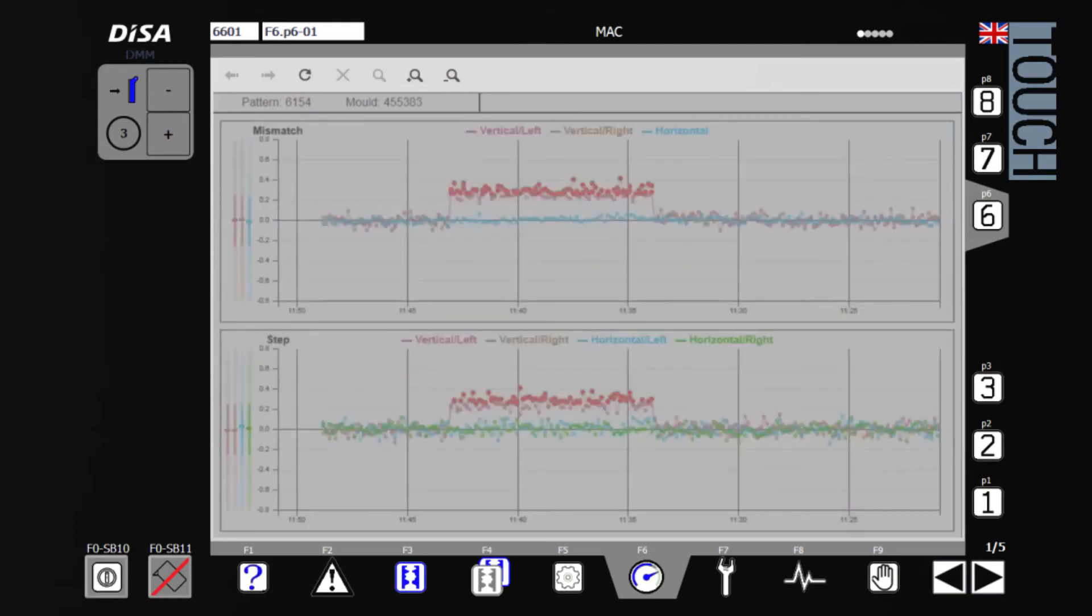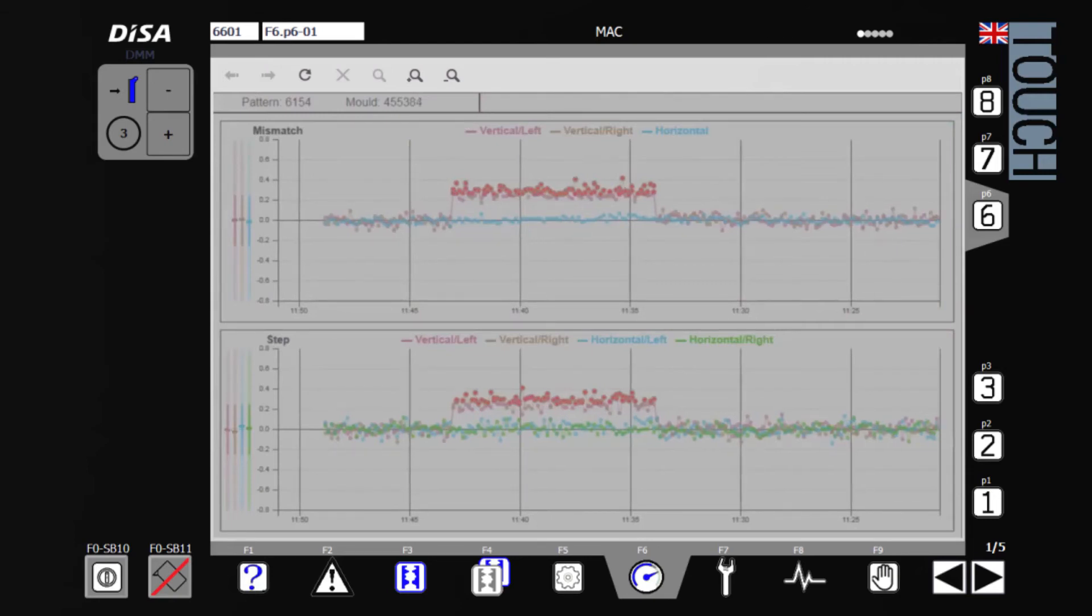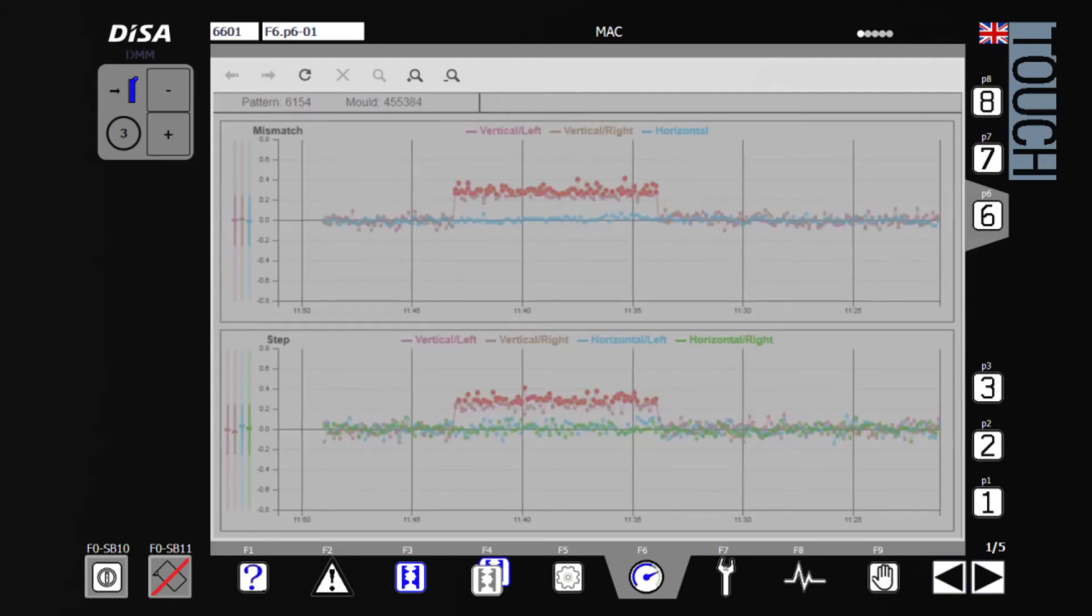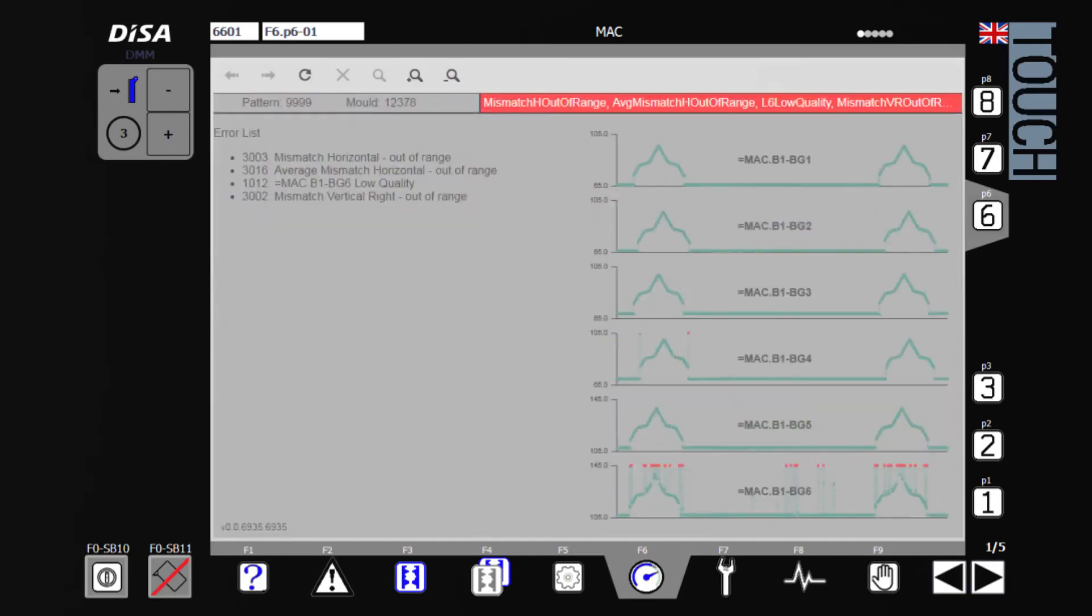The graph views show data from the last thirty minutes of production. This view is helpful to determine peaks or trends in the data. The operator can monitor real-time data and adjust the machine and parameters accordingly. The diagnostic view can be used to troubleshoot the system.